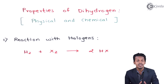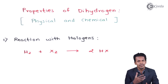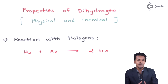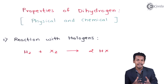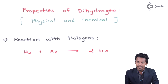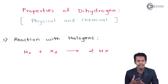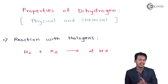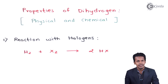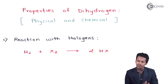Hydrogen is very much reactive with fluorine. We generally have to provide energy in the form of sunlight or UV radiation for reactions to occur, but fluorine is so reactive that even in a dark condition the product is obtained. For chlorine, we have to provide certain radiation for the reaction to happen and obtain HCl. For iodine, we require a certain catalyst for the reaction to occur.